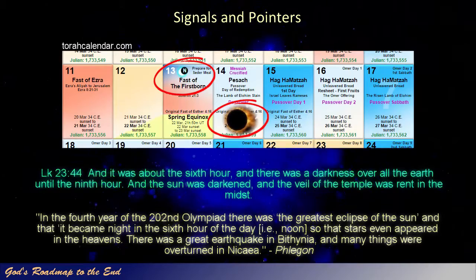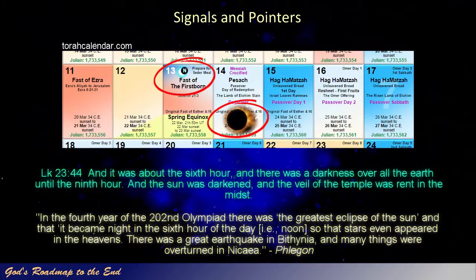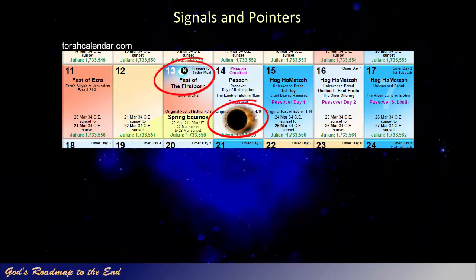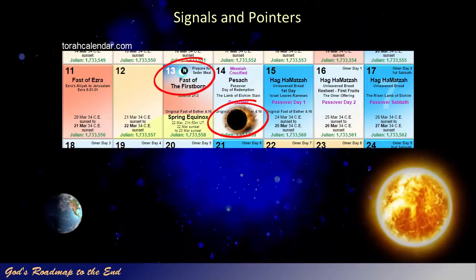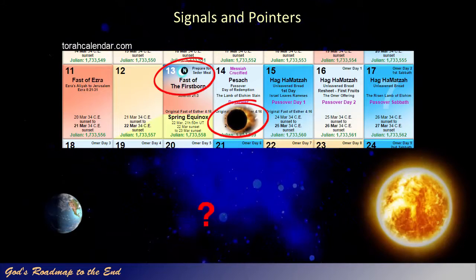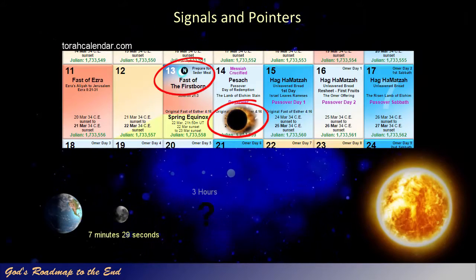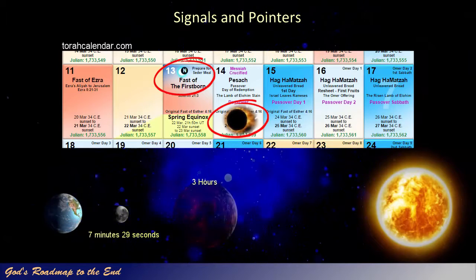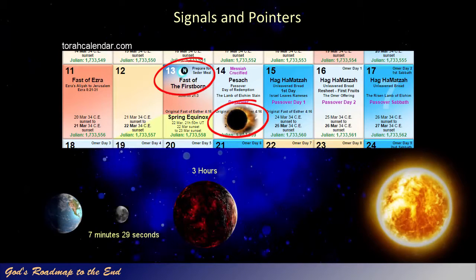Many people brush this event off as impossible, or requiring a symbolic interpretation to understand, as the moon is full at the time when Passover is celebrated. The fact that this solar eclipse lasted for three hours, and that it was recorded by at least four secular historians, tells us that it was indeed not the moon that caused this eclipse. The maximum duration for a full solar eclipse caused by the moon can never exceed 7 minutes and 29 seconds. To have a three-hour eclipse of the sun would require a celestial body of substantial size to move between the earth and the sun.